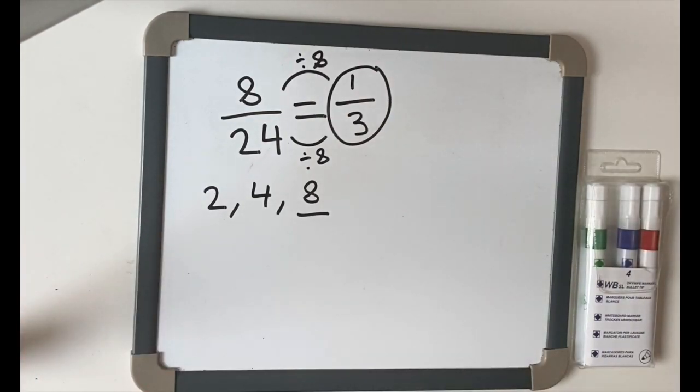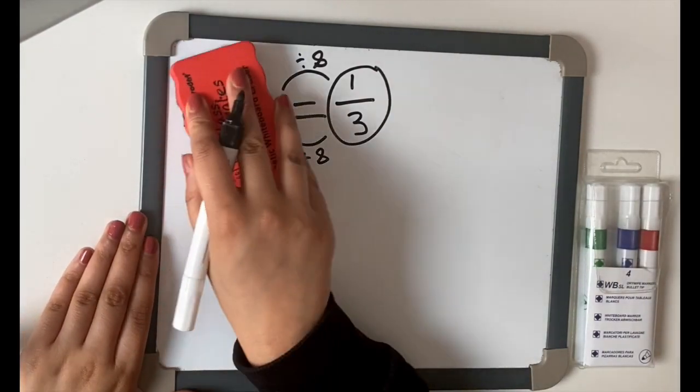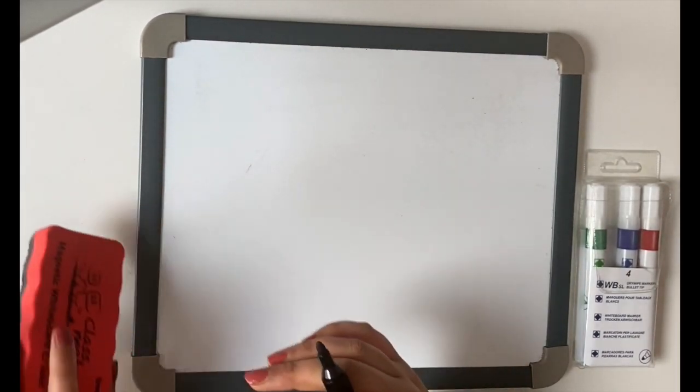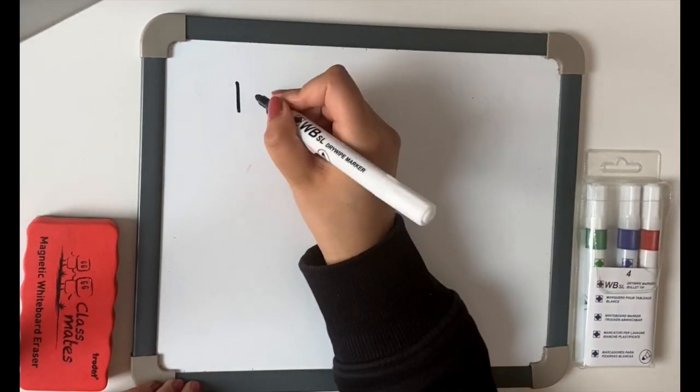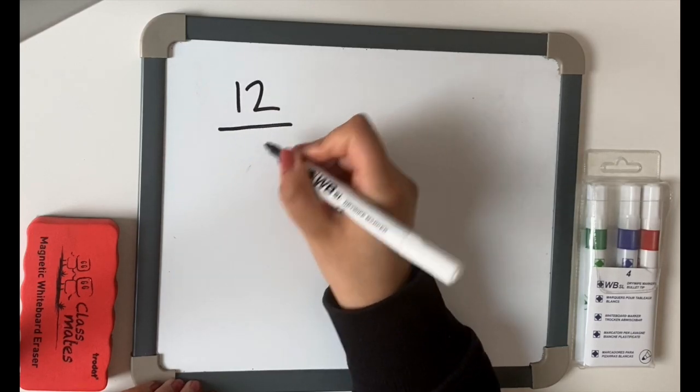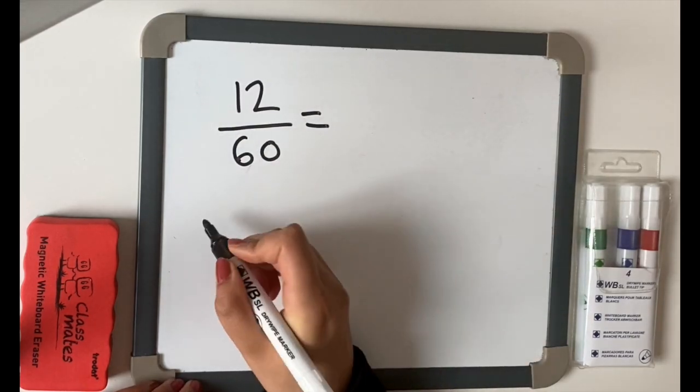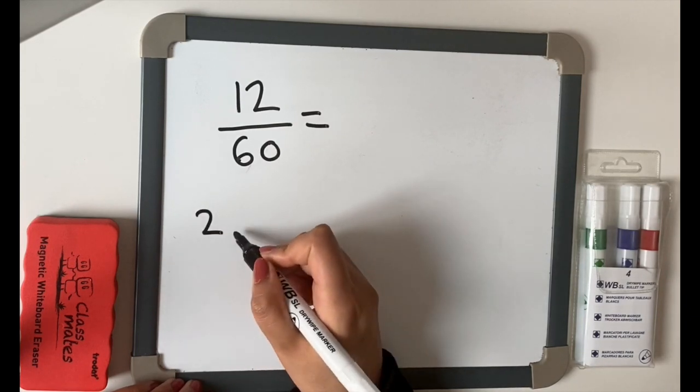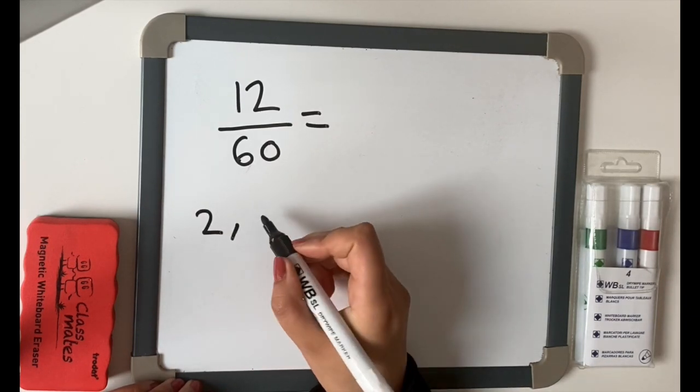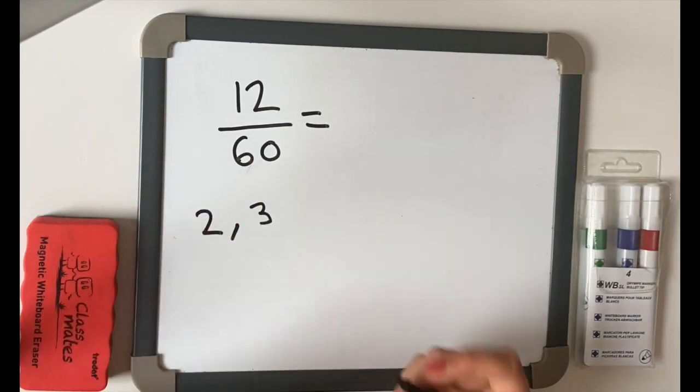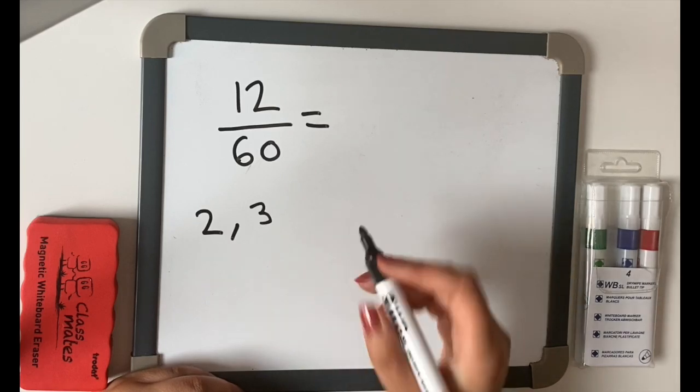Let's have a look at one more. Let's have a look at 12 over 60. Now, once again, we know we can look at the 2 times tables. But will 3 go into it? 3, 6, 9, 12, yes it does. Will 3 go into 60?